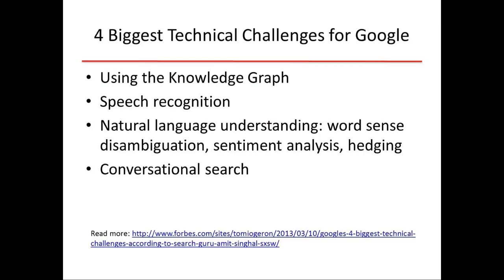I found this great list written by what's called the search guru at Google, Amit Singhal, who's a computer scientist specializing in NLP. These are the four biggest technical challenges for Google according to him. One is using the knowledge graph — a graph constructed by Google mainly from Wikipedia pages, where the nodes are entities such as person names, location names, or numeric entities like dates, and links are relations between them. Using this graph, they can answer questions such as when was Barack Obama born, or who are the grandchildren of George H. Bush, by traversing the children link twice.